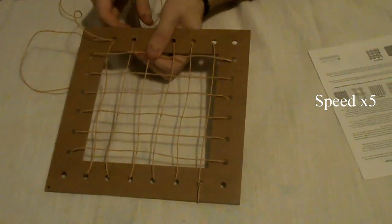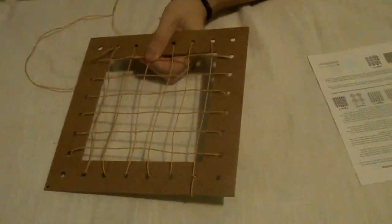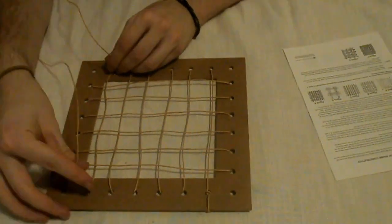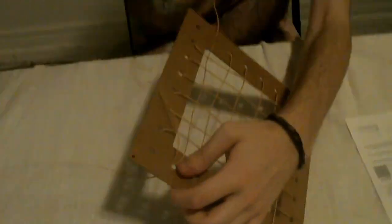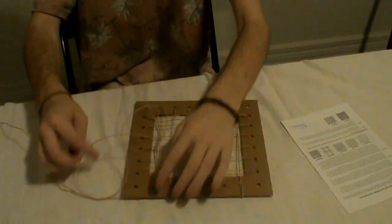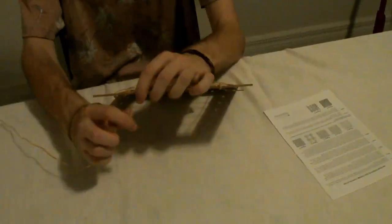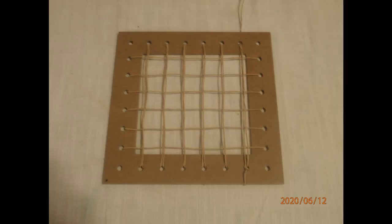Next, weave a second set of vertical supports. Using the cord from hole 24, lace diagonally through hole 11 to begin the second row. When you're done, it should look like this.